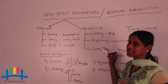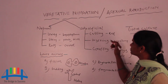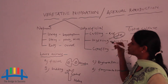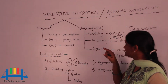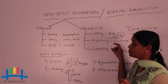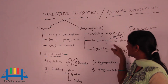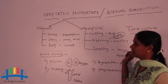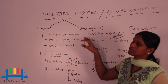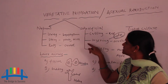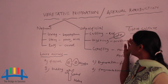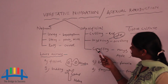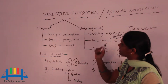Layering involves the node and internode on the stem. The node must be placed into the soil, and from that internode place, new baby roots and baby shoots will grow. An example of layering is nerium — in nerium plants, new plants are obtained by the process of layering at the node or internode place.